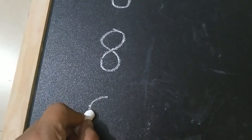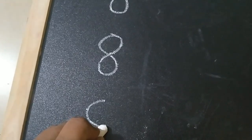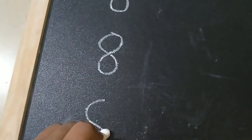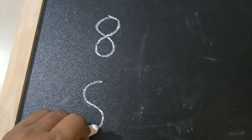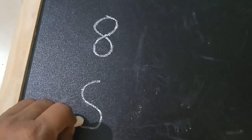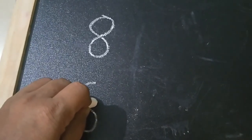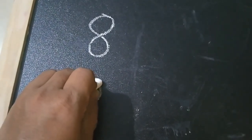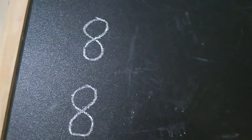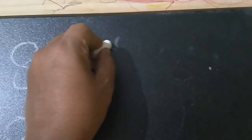So make a curve, come down, again a curve, turn, make a curve, cross and make a curve and join. Number 8.